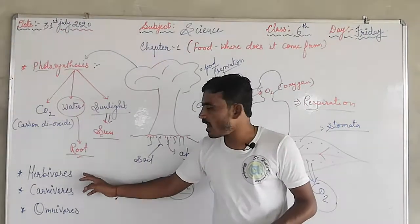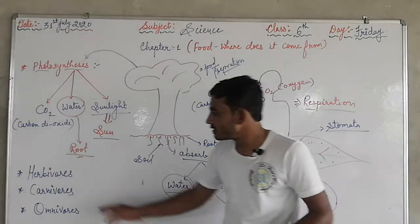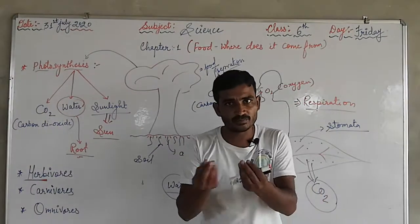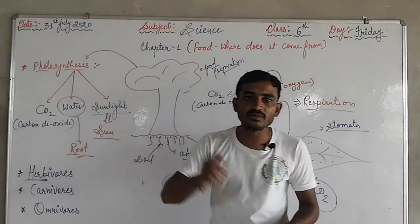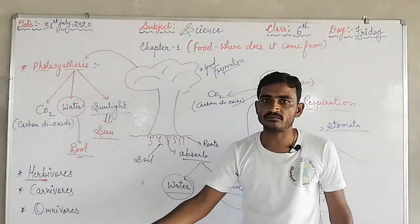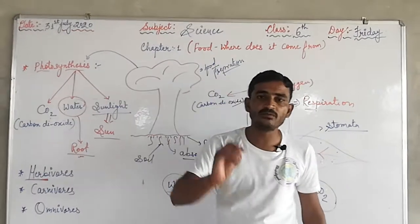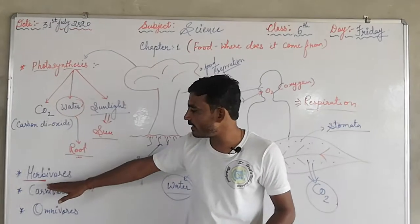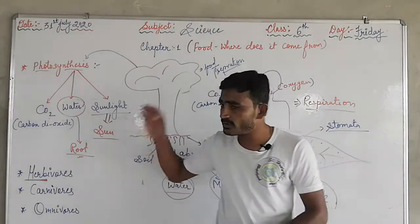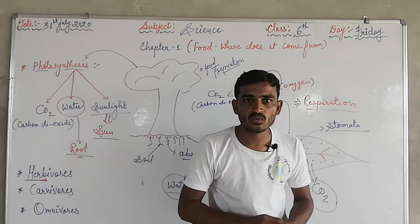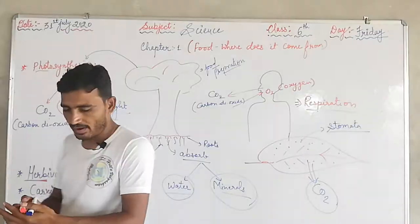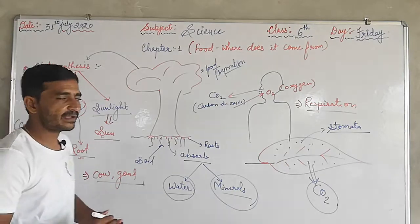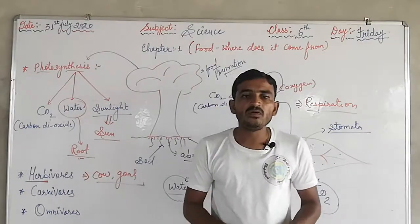Let's talk about herbivores. Which animals are herbivores? Herbivores are those animals who eat only and only plants and plant products. Those types of animals are called herbivores.